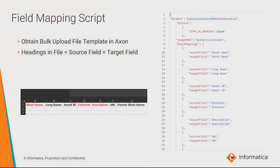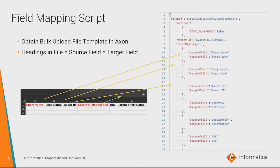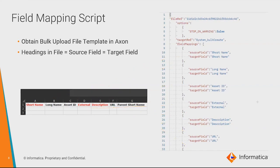It's important that you use the bulk upload templates provided in Axon. Your source field and target field are easiest when they have the same names. If you use the bulk upload templates from Axon, then your source field will be the same as your target field, so you don't have to worry about changing field names. As you can see, they all correspond to one another. When you do this, you're mapping the fields from the bulk upload spreadsheet into Axon, and after you run this call you should be finished.